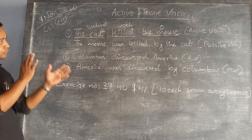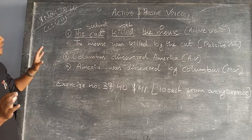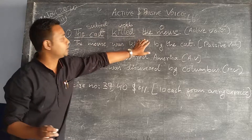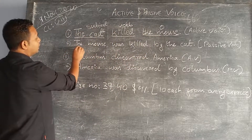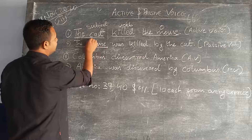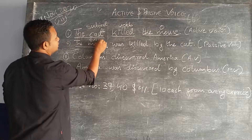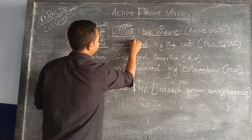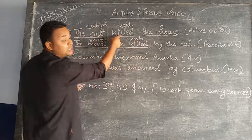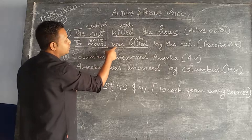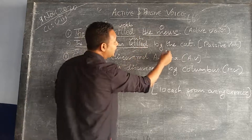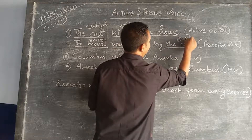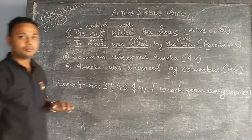Whenever we have to transform this sentence into passive form, the object becomes the subject. So 'the mouse' becomes the subject: 'The mouse was killed.' Since 'killed' is in the past form, we write 'was killed,' and then 'by the cat' — the cat becomes the object in the passive form.